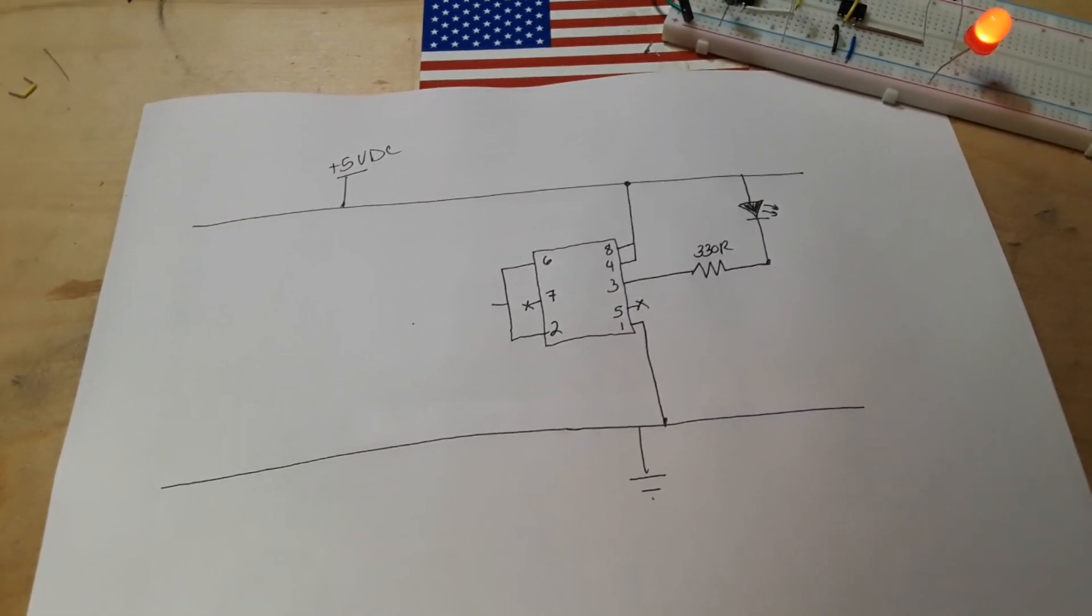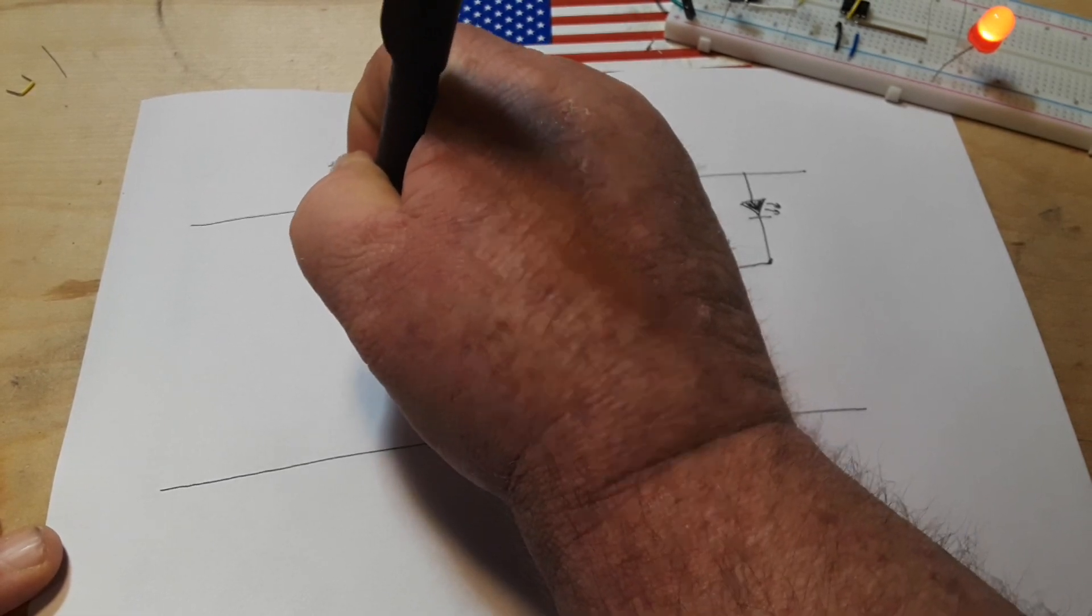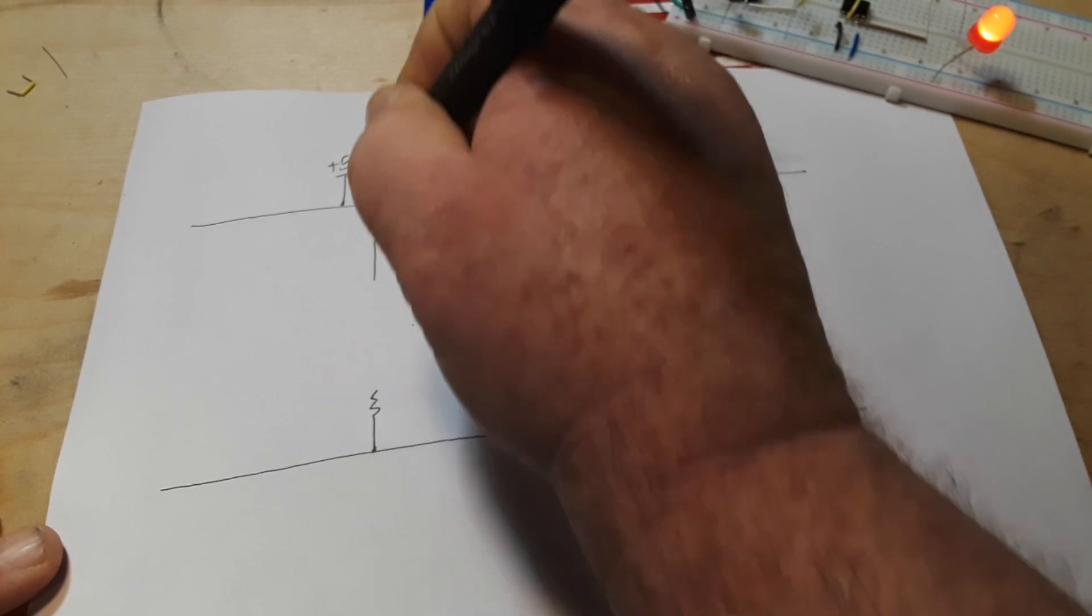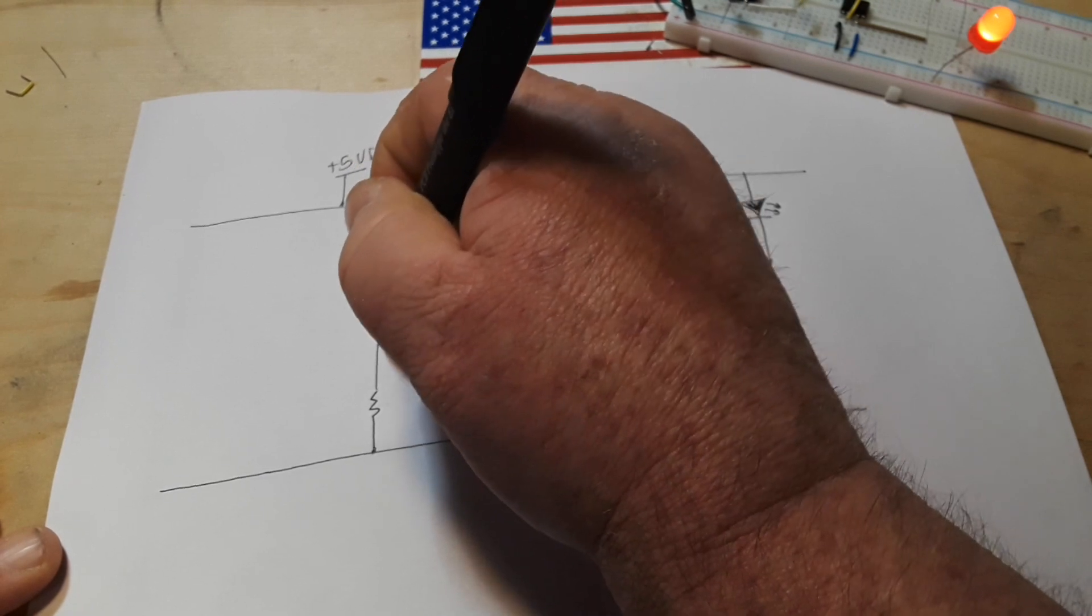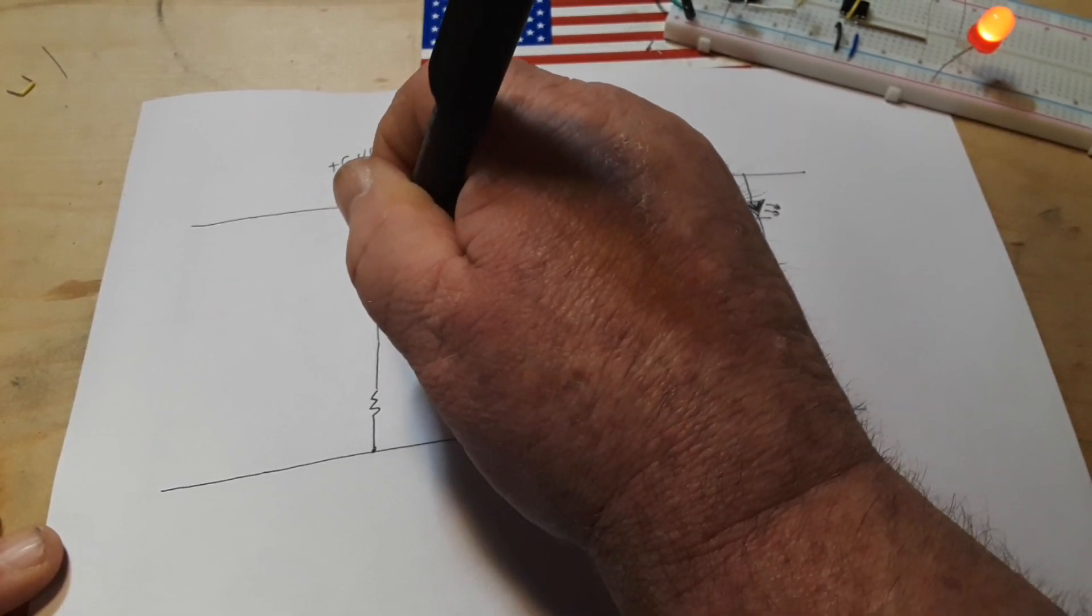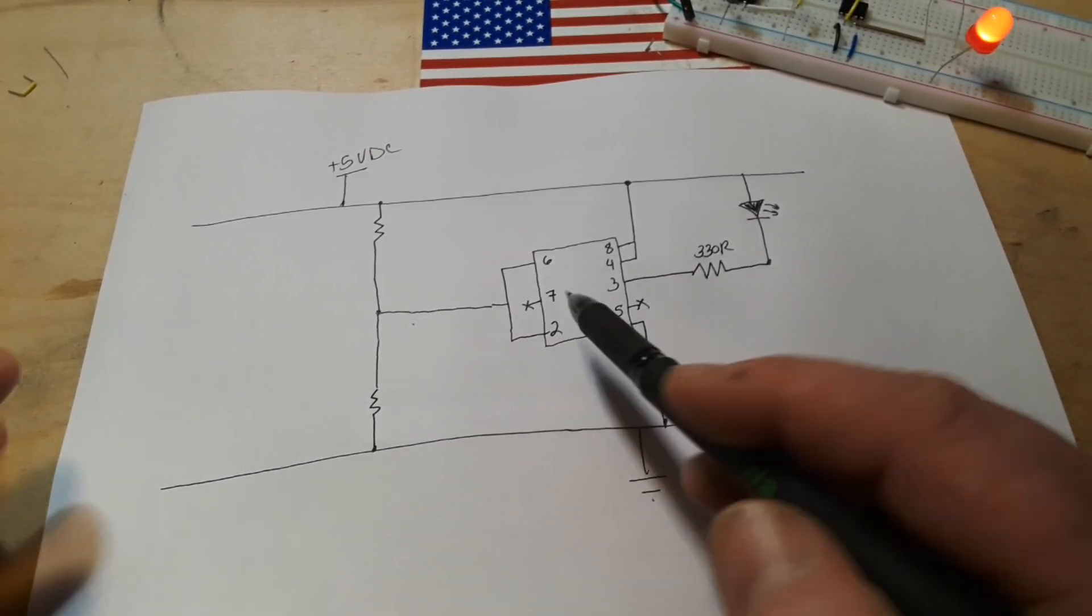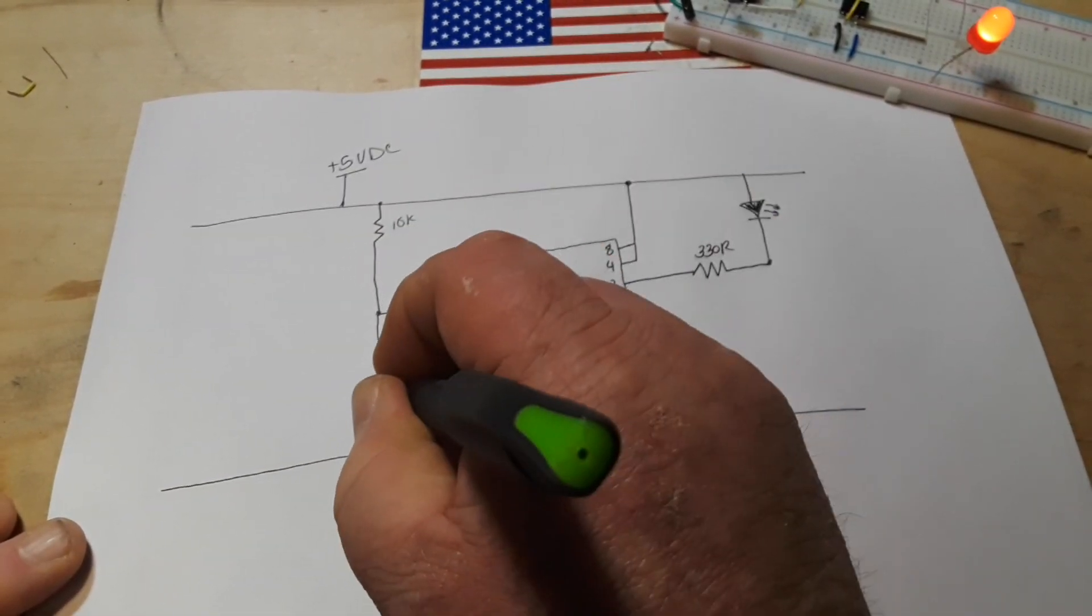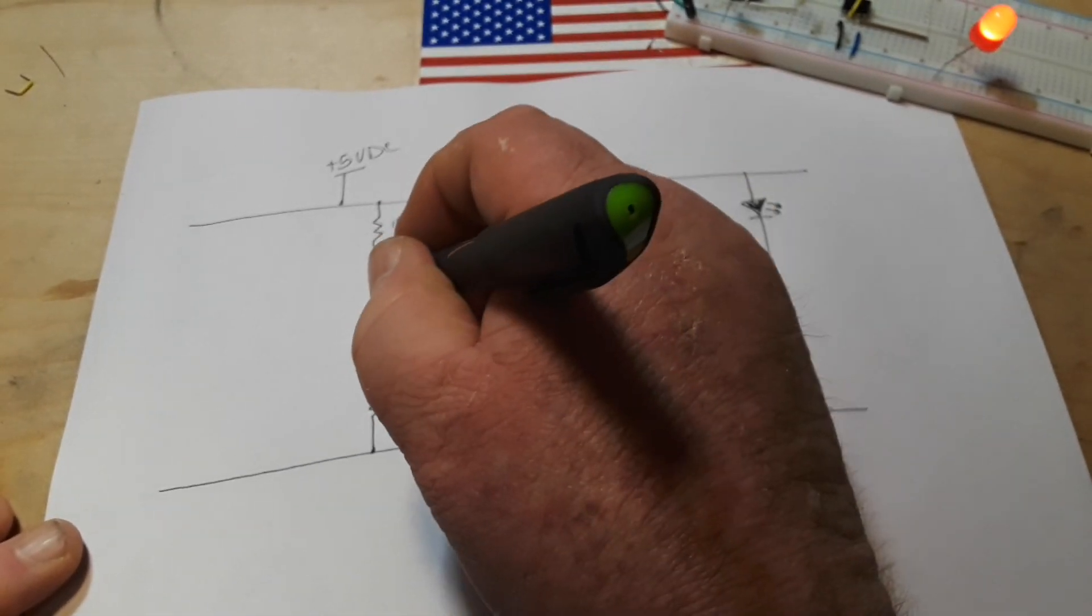So now we're going to take two 10k resistors and we're going to whip up a voltage divider here. It is from that voltage divider that we're going to feed this. So what you see is our 555 is going to be hanging on these 10k resistors, so right here at this node we're going to be at just about 2.5 volts.